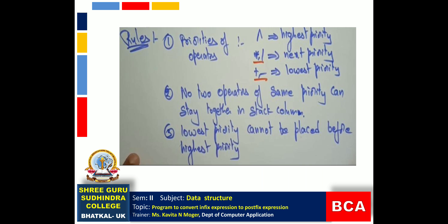There are some rules we have to follow while converting the expression. The first rule is: we need to know the priority of the operators. Exponent has the highest priority. Next, Multiplication and Division have the next priority.